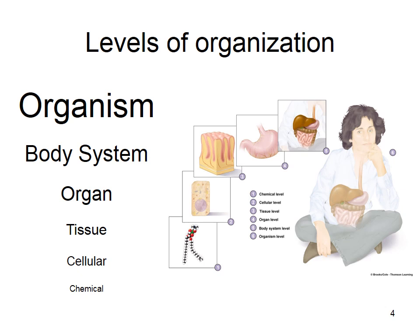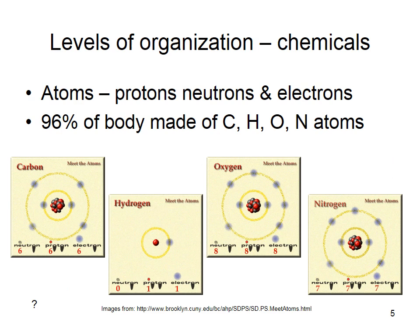Here we have tissue within the stomach, then an actual organ — the stomach — which is part of the GI tract, which is the body system, which is part of the organism. So chemicals are the building blocks of our cells, which are the building blocks of our tissues, which are the building blocks of our organs, which are the building blocks of our organ systems, which make up us.